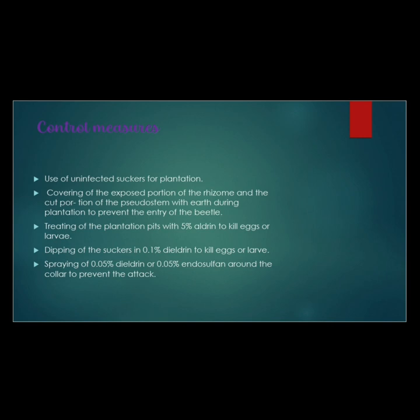Control measures: use disease-free suckers for planting. Cover the open part of the rhizome and the cut part of the fallen stalks in the ground during planting to prevent beetle infestation. Bury the garden pits with 5% aldrin to kill eggs or larvae. Dip suckers in 0.1% dieldrin to kill eggs and larvae. Spray 0.05% dieldrin or 0.05% endosulfan around the collar region to prevent attack.